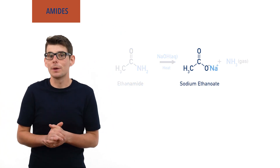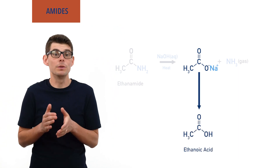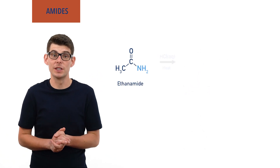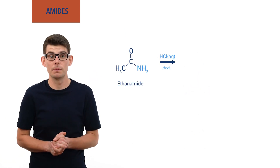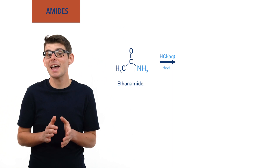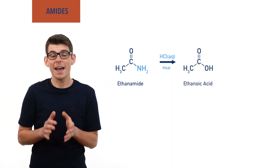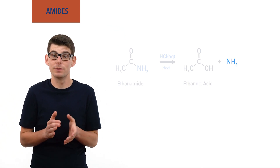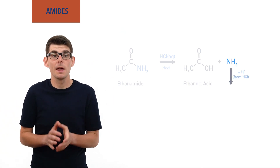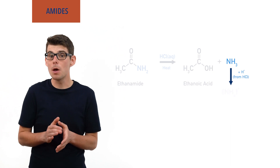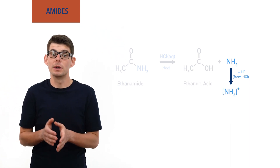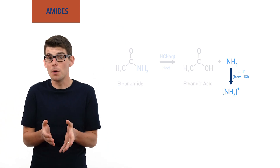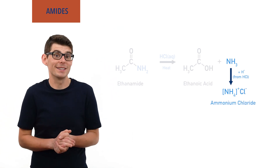To obtain ethanoic acid from alkali hydrolysis, dilute acid would then have to be added. If ethanamide is heated with a dilute acid such as hydrochloric acid, the carboxylic acid ethanoic acid will form, and the ammonia released will accept H+ ions from the acid, forming positively charged ammonium ions that form ammonium salts with the negative ions from the acid — for example, ammonium chloride if hydrochloric acid is used.